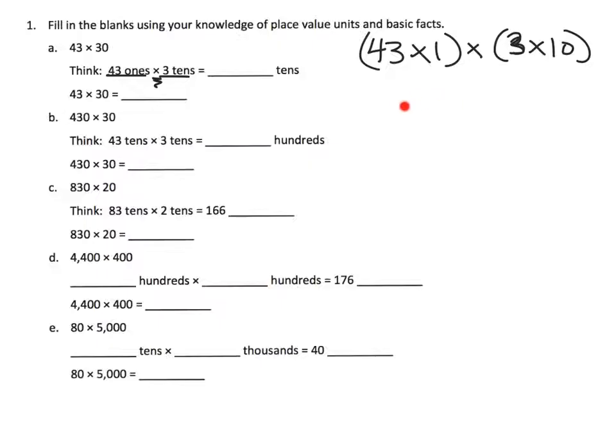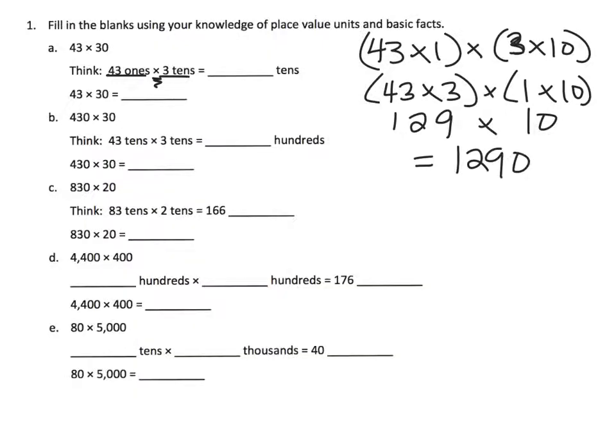Now 43 times 3, that's pretty straightforward, that's 129 times, and then 1 times 10, well that's pretty straightforward, that's 10. We learned from the previous module that 129 times 10 is 1290.